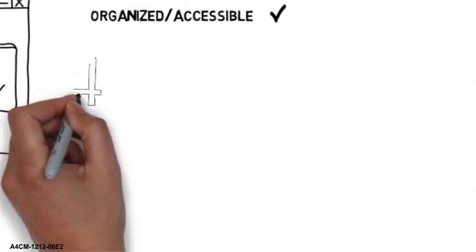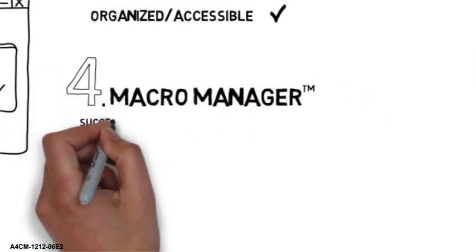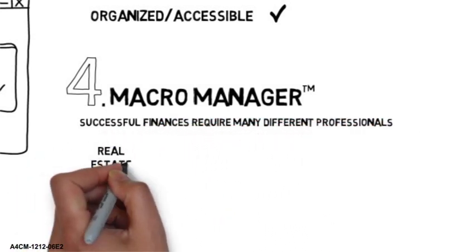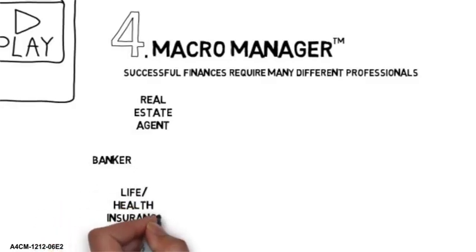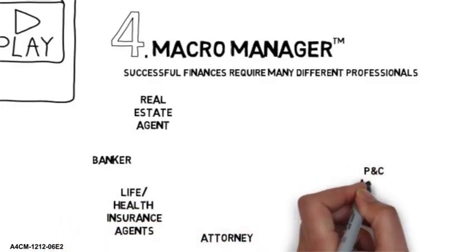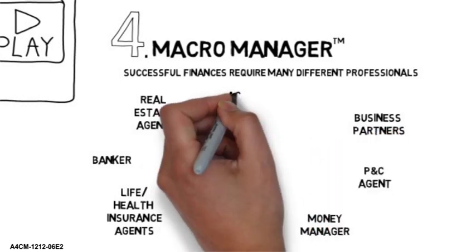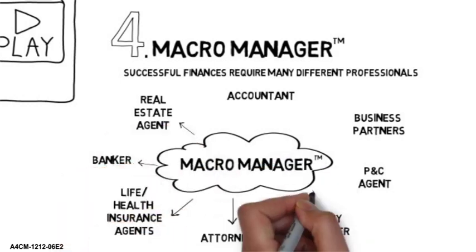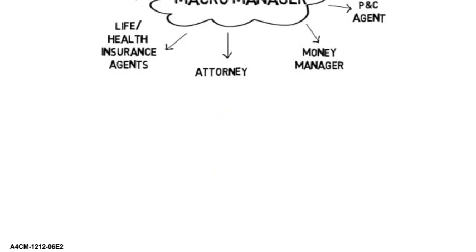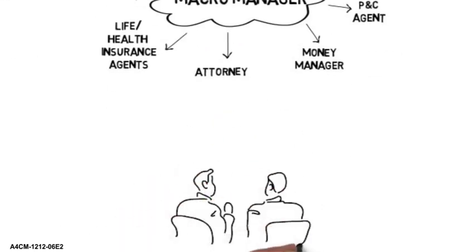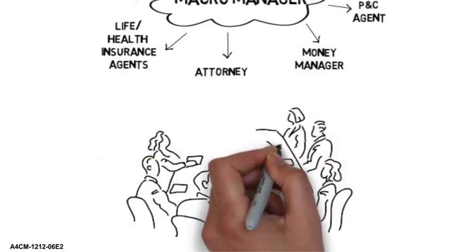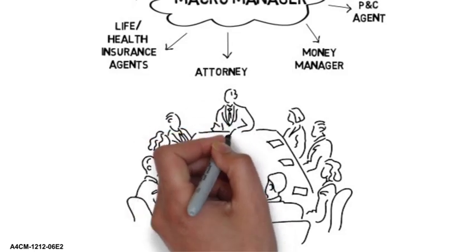The fourth need is a macro manager. In order to make successful financial decisions, you need to do business throughout your life with lots of different professionals, such as a real estate agent, banker, life and health insurance agents, an attorney, a money manager, a P&C agent, business partners, and an accountant. But what you really need is a macro manager, and that's where we come in. As the macro manager, we are uniquely positioned to coordinate with your other advisors. It's like getting all of those advisors into one room at the same time working together on your behalf. It's not that we recommend changing your trusted advisors, we want to help you coordinate with them.